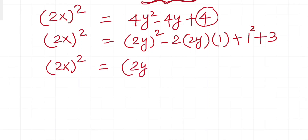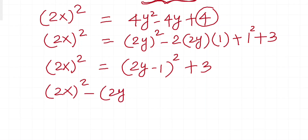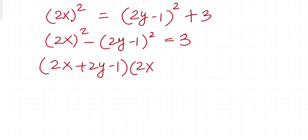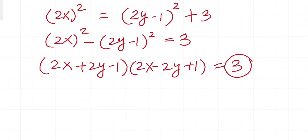Now I can complete the square: 4x² = (2y - 1)² + 3. This becomes a difference of two squares: (2x)² - (2y - 1)² = -3, which rearranges to (2x + 2y - 1)(2x - 2y + 1) = 3. Because 3 is a prime number, we have only a limited number of solutions.